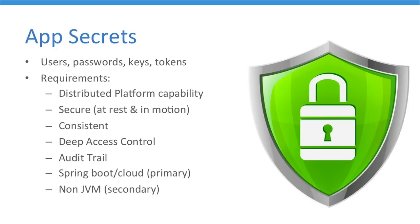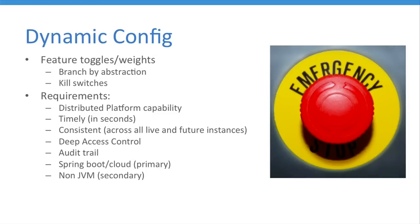We are primarily looking at Spring Boot and Spring Cloud apps, with some non-JVM apps as nice-to-have. What is dynamic config? You've got your feature toggles, branch by abstraction, and your kill switches — shut it down when something goes wrong. That's a hard requirement for our support teams, and it's something we don't currently have because it's not a platform capability across the board, but it would be really nice to have.